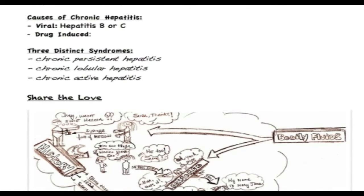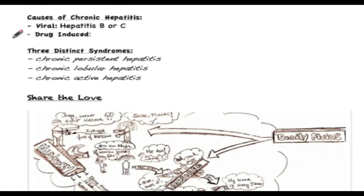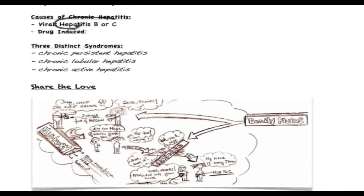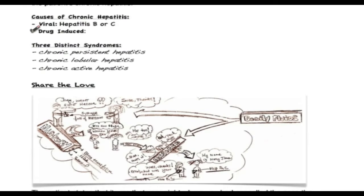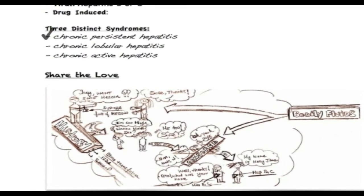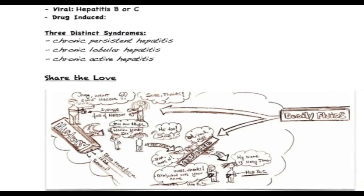Of concern is the cause of the patient's hepatitis — whether it be viral, such as hepatitis B or C, or drug-induced. Three distinct syndromes associated with chronic hepatitis include chronic persistent hepatitis, chronic lobular hepatitis, and chronic active hepatitis.